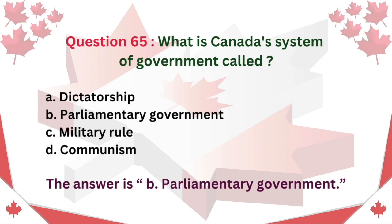Question 65: What is Canada's system of government called? A. Dictatorship. B. Parliamentary government. C. Military rule. D. Communism. The answer is B: Parliamentary government.